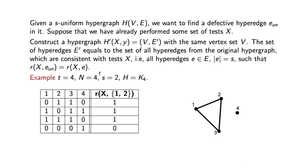For example, say the original hypergraph has S equals 2, so it is a complete graph on four vertices. The new hypergraph H' contains only those edges whose union of columns gives the same outcome vector as the actual defective pair. The union of the first and second column, the first and third, and the second and third may all give the same outcome vector, so coin number four could potentially be fake.